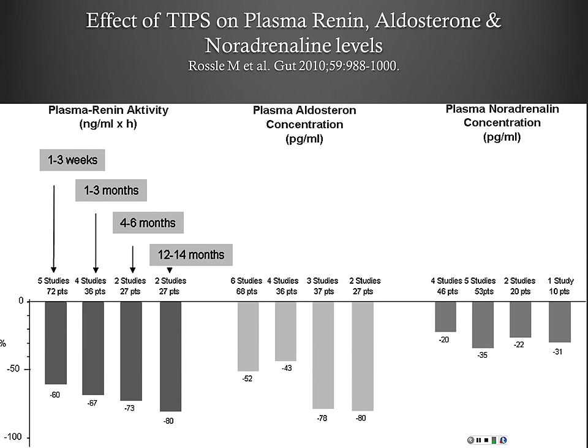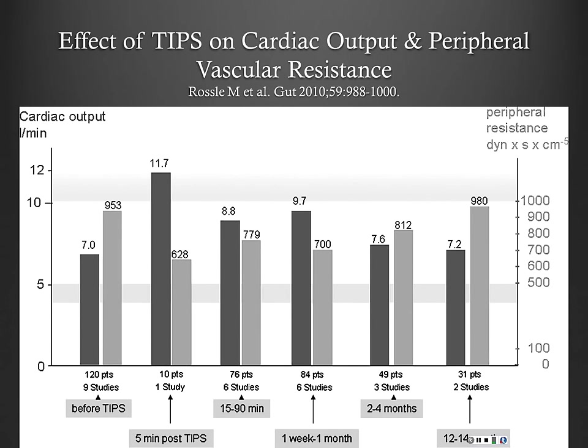After two to six months there were dramatic differences in pre- and post-TIPS levels of these neurohormones. Cardiac output typically improves initially and then returns to pre-TIPS baseline after about six months, because immediately after TIPS you're infusing all the portal volume directly into the right heart.